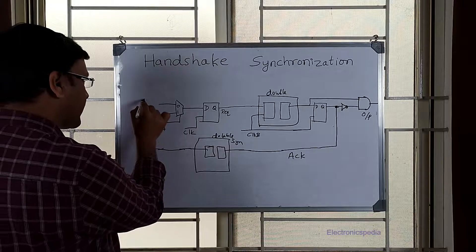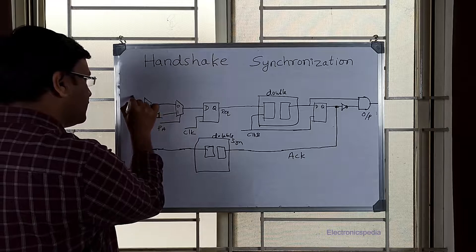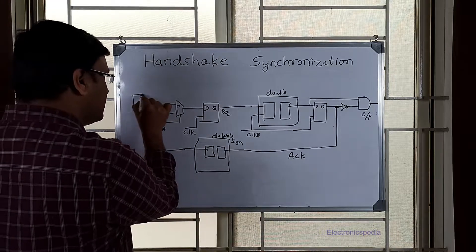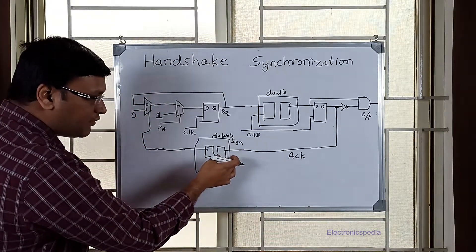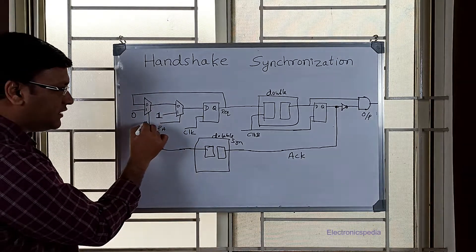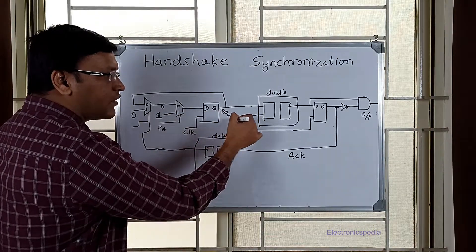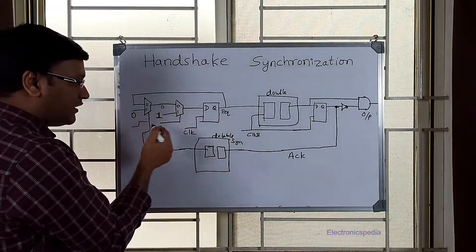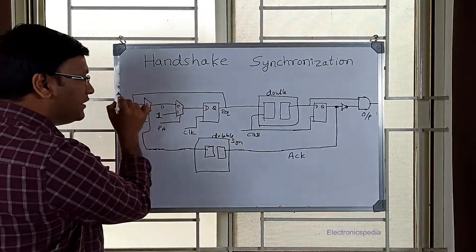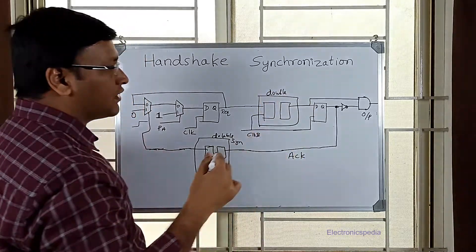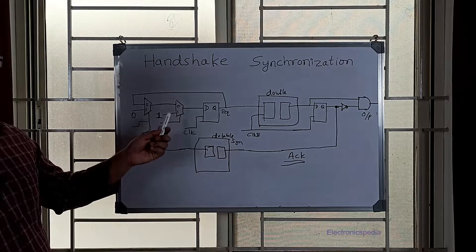After the double synchronizer in the source domain, I feed the output to the select line of the MUX. When the acknowledgement is seen — it's a level signal of one — the MUX output becomes zero, so the request is brought down. If the acknowledgement has not been seen yet, the feedback keeps it set to one, so the request stays high until the acknowledgement is received from the destination domain.